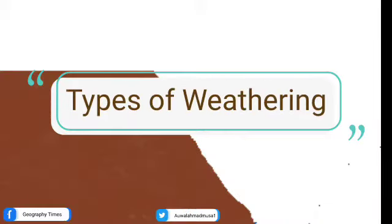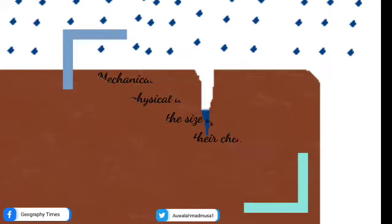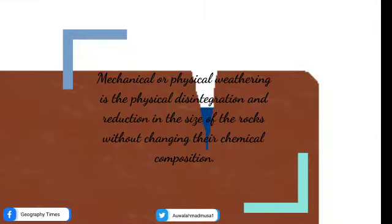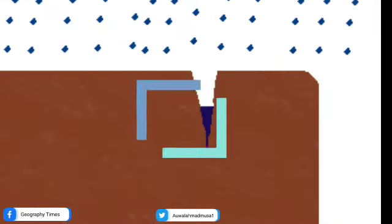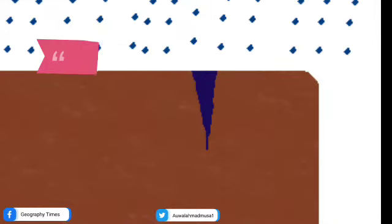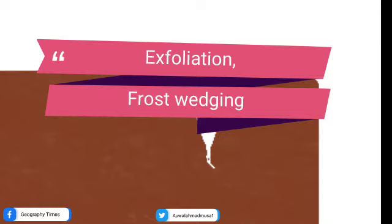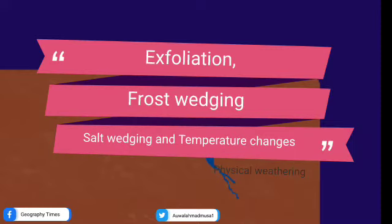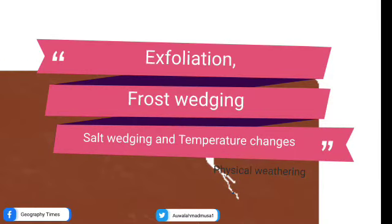Mechanical or physical weathering is the physical disintegration and reduction in the size of rocks without changing their chemical composition. Examples include exfoliation, frost wedging, salt wedging, temperature changes, and abrasion.